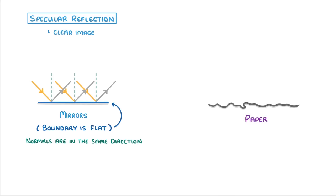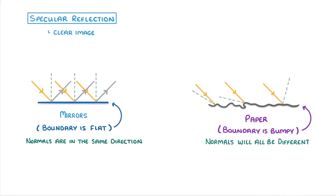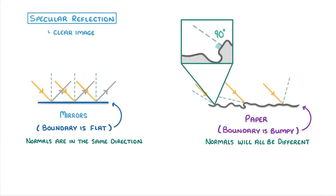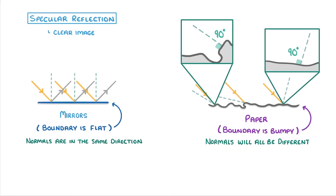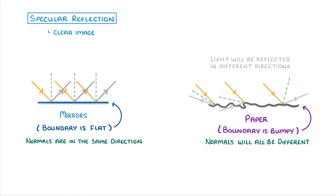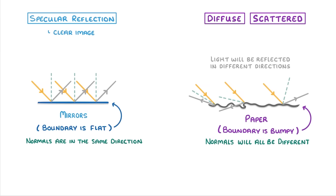Other materials, though, like paper, have a relatively rough surface when you look at them really closely, which means that the boundary is all bumpy. This time, even though the incoming light rays are all coming down in the same direction, the normals will all be pointing off in different directions, because the surface itself isn't flat. For example, 90 degrees to this surface over here would be different to 90 degrees to this surface over here. So the normals point in different directions, and this means that the light will be reflected in all different directions. We call this type diffuse, or scattered reflection, and we normally can't see ourselves at all in these types of materials, which is why you can't see your reflection in a piece of paper.